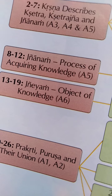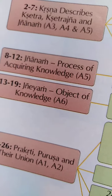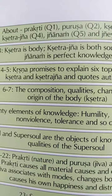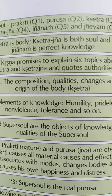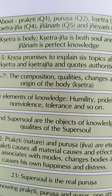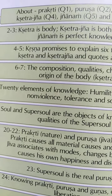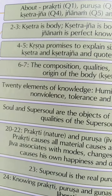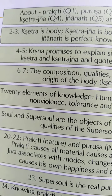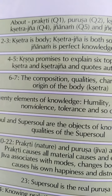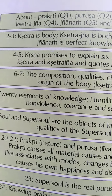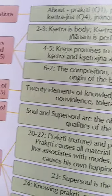Then in the eighth to twelfth shloka, Krishna explains Gyanam — the process of acquiring knowledge. He gives 20 elements of knowledge, starting with humility and pridelessness, non-violence, tolerance and so on. Krishna explains that these factors are the elements of knowledge. If you want to be a truly knowledgeable person, you have to be humble, non-violent and tolerant. This is the symbol of having knowledge.